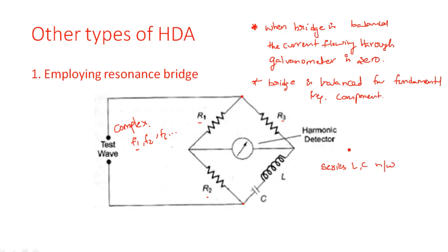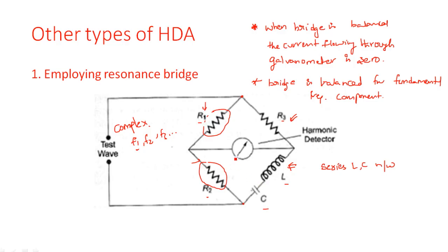The L and C values will determine the frequency. We select the values of L and C in such a way that they give frequency F1. Because of this condition, the reactances of the four arms are equal — the impedance in one arm equals the impedance in the opposing arm. We select the values of L and C such that the current flowing through the galvanometer is zero. The balancing condition should happen only for the fundamental frequency component.